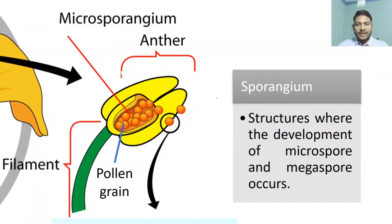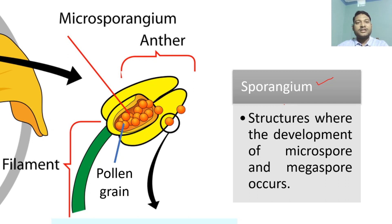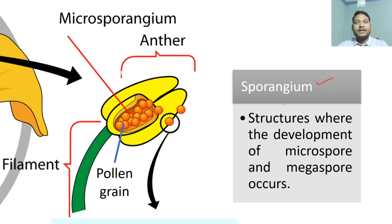Here is the Microsporangium. Before we go to Microsporangium, let's talk about Sporangium. Sporangium is a structure where development of spores occurs. Spores could be Megaspore or Microspore. Megaspore typically represents the female structure and Microspore typically represents the male structure.